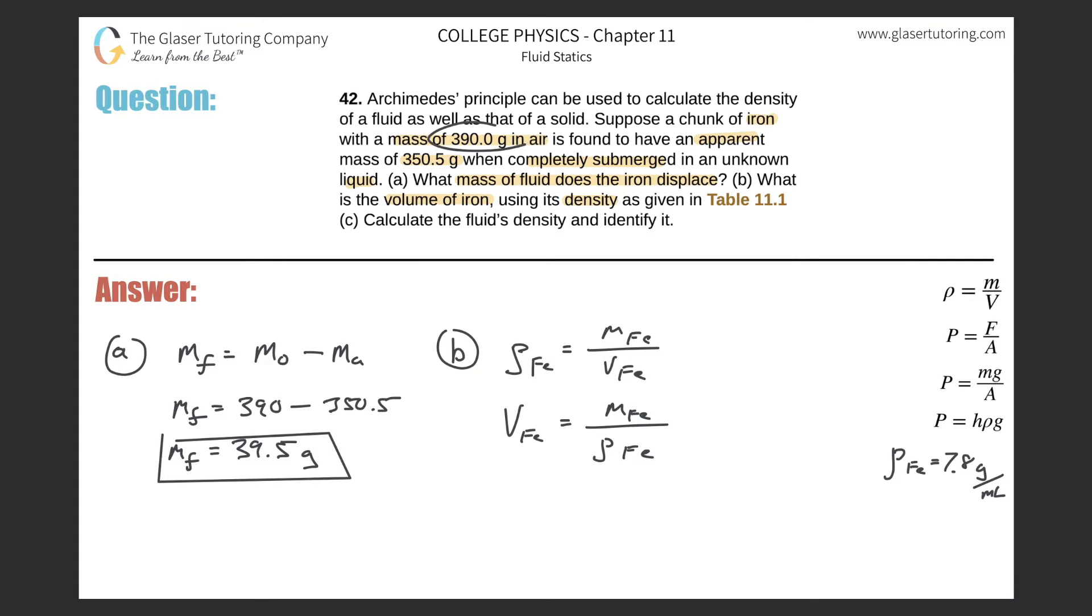So we are asked to find the volume of the iron. So why don't we just cross multiply here? So we have the volume of the iron is going to be equal to the mass of the iron divided by the density of the iron. And what's the mass of the iron we're going to use? The mass of iron in air. Don't use the apparent mass. You got to use the actual mass in air. So the volume of the iron will equal 390 grams divided by 7.8 grams per milliliter. So when we do the division here, it's 390 divided by 7.8, which is 50 milliliters. This is the volume of the iron by using the density from your table.